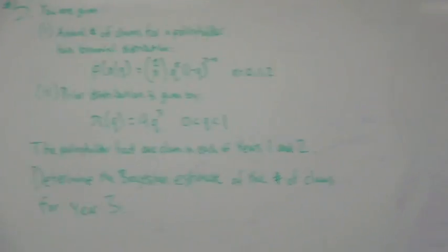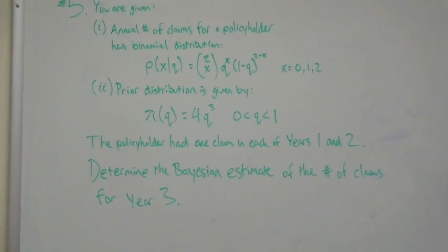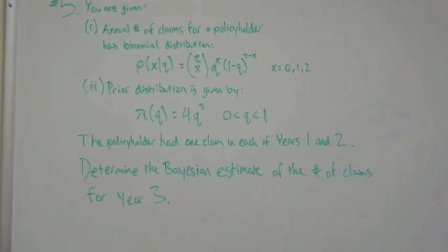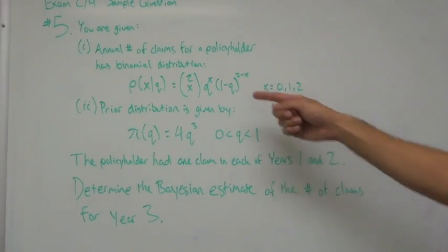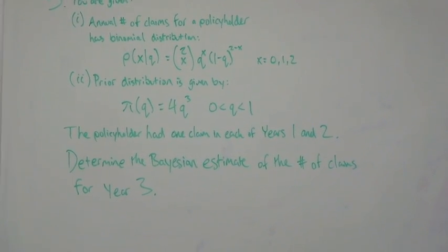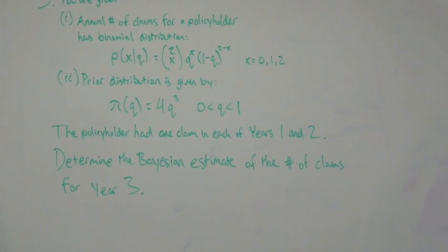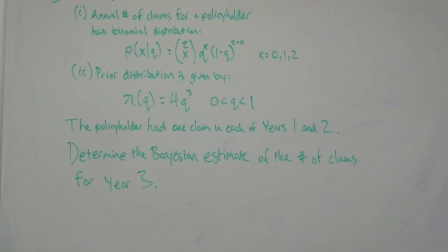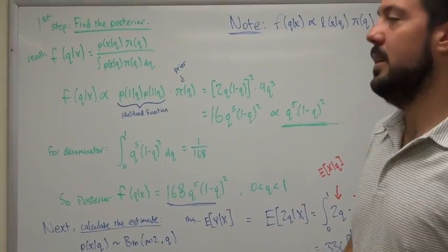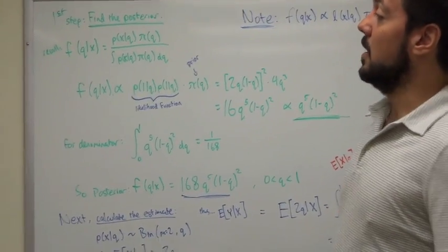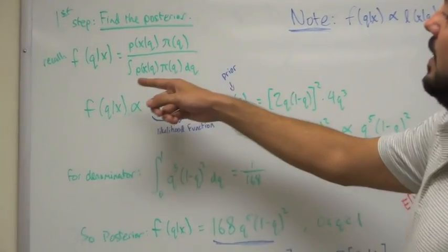The next example involves calculating a posterior distribution and then using it to calculate an estimate. This is from Exam C4 sample question number five. You're given that the annual number of claims has a binomial distribution given by a specified function, and the prior distribution of parameter q is also given. The data shows the policyholder had one claim in each of years one and two. The question asks to find the Bayesian estimate of the number of claims for year three. The first step is to find the posterior distribution, defined as the likelihood times the prior over the integral over the parameter space of the two.